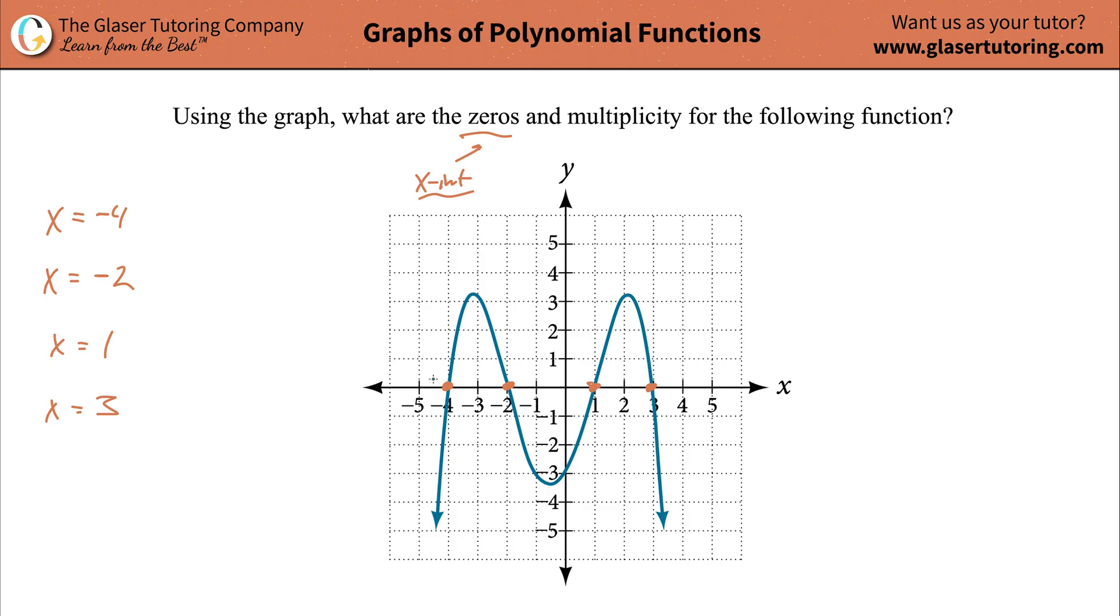Anyway, whenever you look at a particular x-intercept, whenever it crosses that axis, it actually crosses, whether it snakes and crosses or just crosses blatantly, like in a straight, almost linear line, you're always going to have what's known as an odd multiplicity. An odd number: 1, 3, 5, 7, 9, etc.